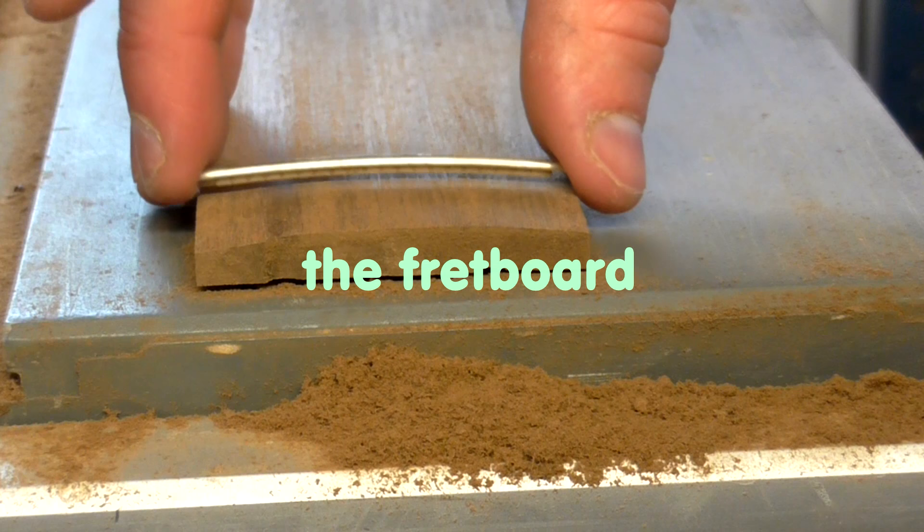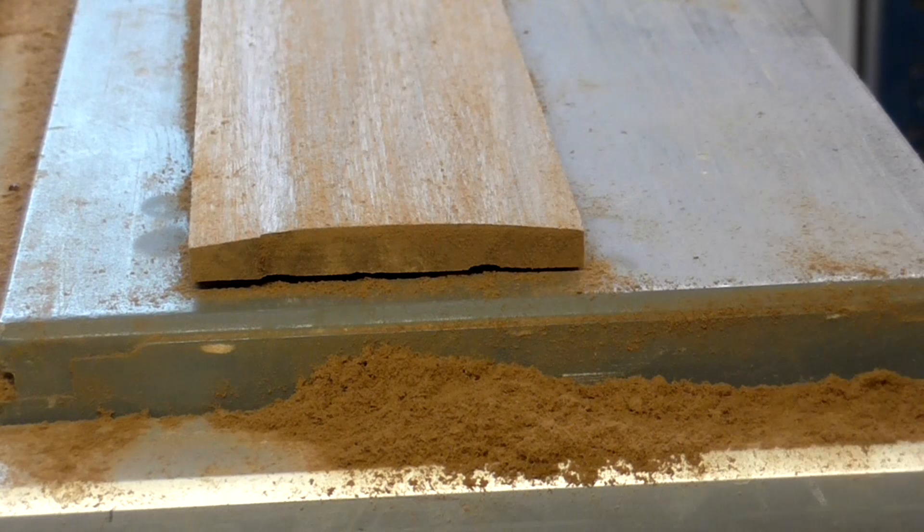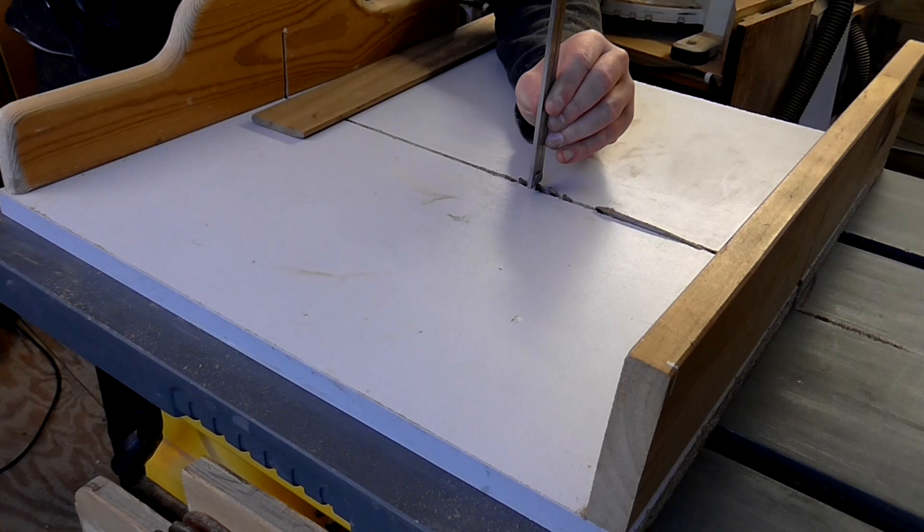At the end of the last video I sanded the fretboard to the right radius to match the frets. Before installing the frets I first wanted to cut the slot for the nut to sit in so that I could measure from this slot to get the correct spacings for all of the frets.